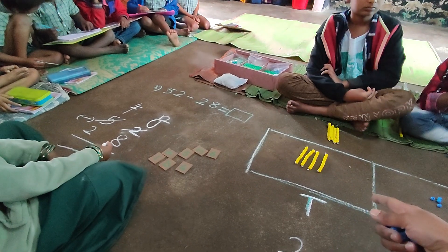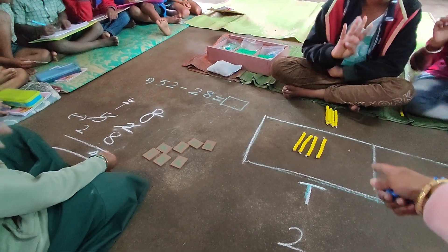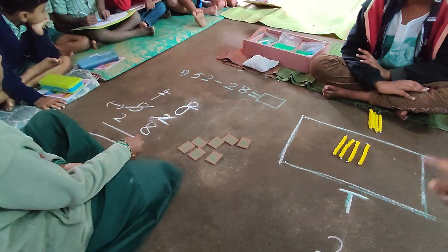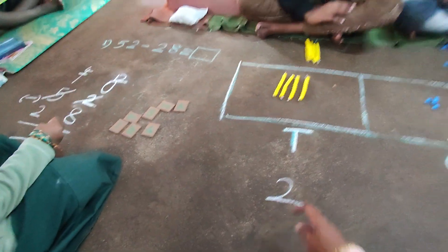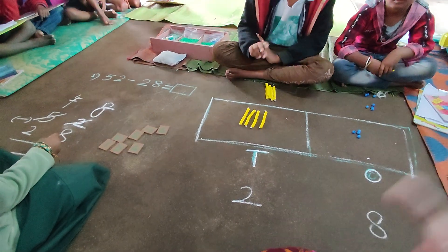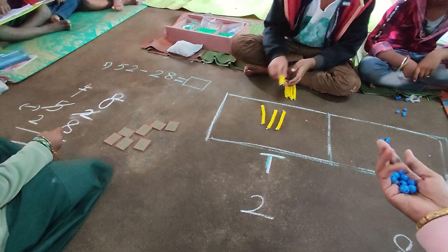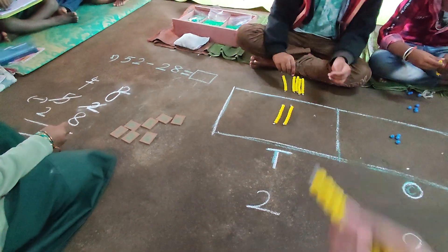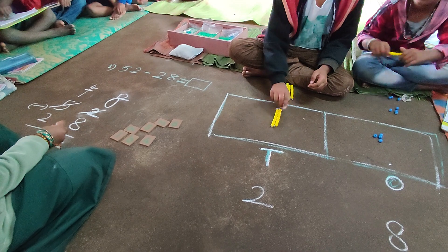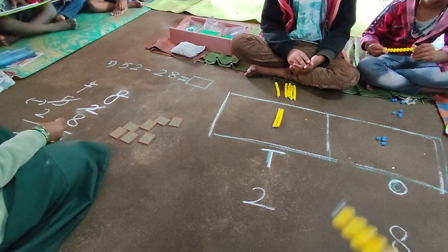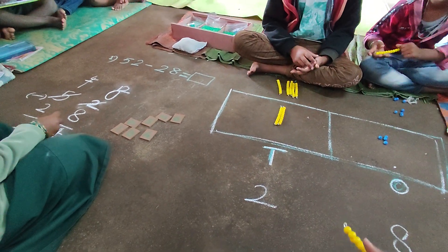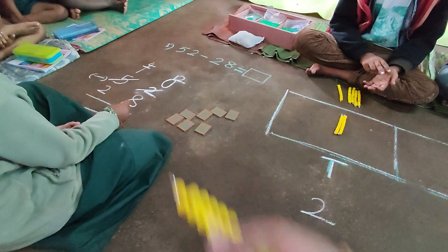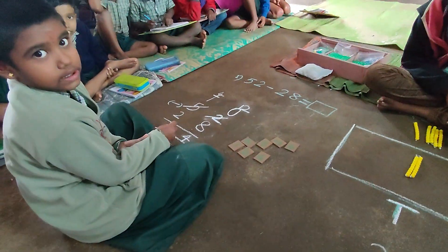Now come to the tens place. How many tens are there? 4 tens. See there, she has written 4. From 4, how many tens do you have to take away? 2 tens. Take away 2 tens — give me: 1 ten, 2 tens. Very good. Now remaining how many tens are there? 2 tens. So from 4 tens you take away 2, remaining is 2 tens. Ratnaveni, write 2 there.